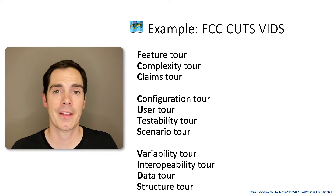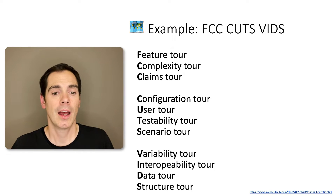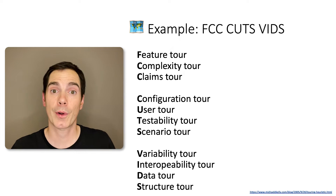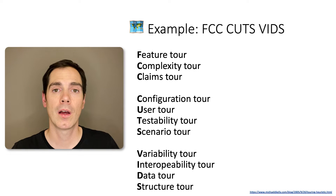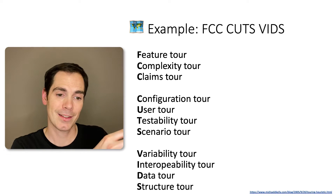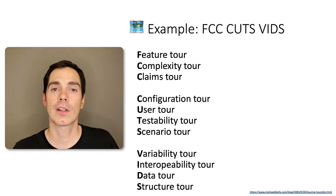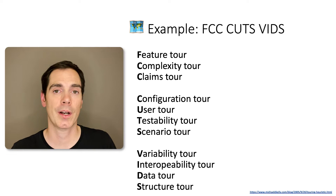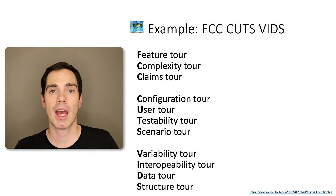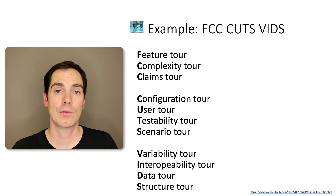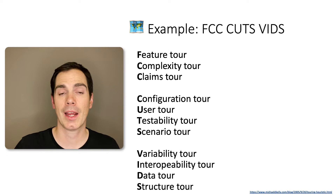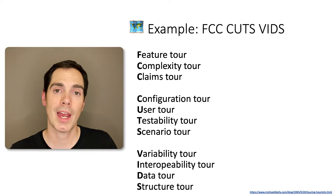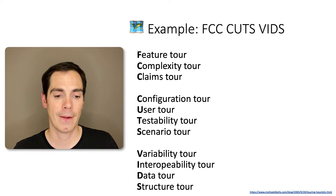Here's an example using FCC CUTS WIDTHS. I really like this touring heuristic from Michael because it helps me get into a new product. For example, the Feature Tour: I concentrate for one hour on that single character and explore the new product, creating a feature map — what's available, is there login, registration, an imprint, a footer, a header, what navigation types, and so forth. It helps you get a really good overview of a current project.